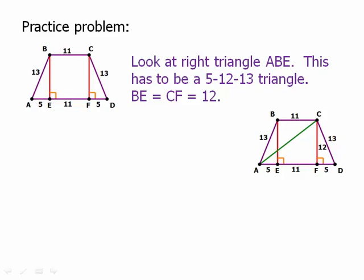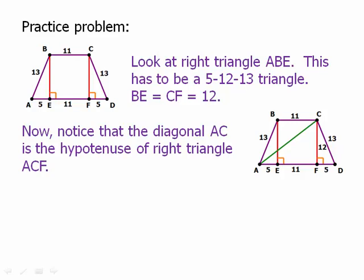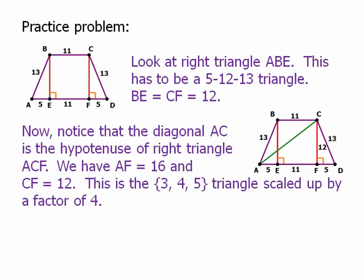Now we know the height is 12. The diagonal AC is the hypotenuse of right triangle ACF. AF is 5 plus 11 equals 16, and CF is 12. This is the 3-4-5 triangle scaled up by a factor of 4 — a 12-16-20 triangle. So the hypotenuse AC is 20 — that's the length of the diagonal. Notice we found everything using the Pythagorean theorem. Whenever you have to find the length of a diagonal or almost any slanted line, chances are very good that it's a Pythagorean theorem problem.